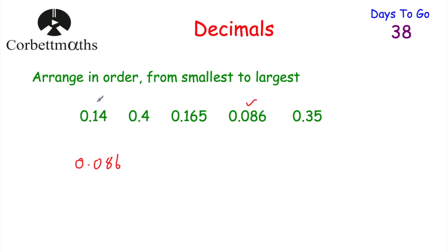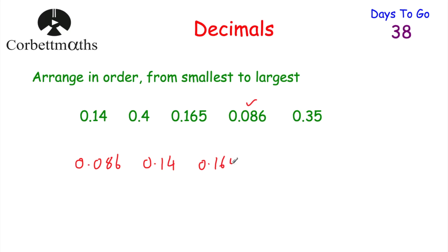Now let's look at our tenths again. We've got one, four, one, and three. The next smallest will be between the two numbers with a one in the tenths column. So let's look at our hundredths column — we've got four hundredths and six hundredths. Four hundredths is smaller, so it's going to be 0.14 and then 0.165.